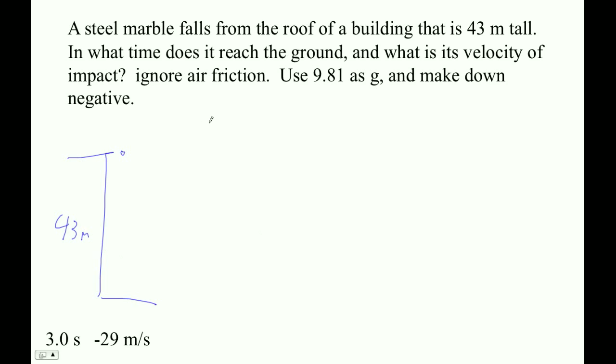All right, I can do that. S, U, V, A, and T. I think our initial velocity is zero because it just falls, right? The acceleration is negative 9.81. Our displacement is down 43 meters.